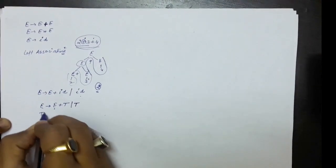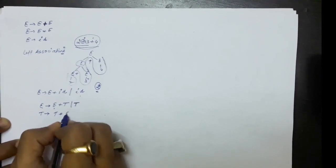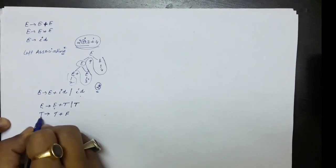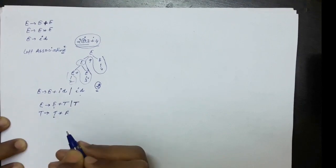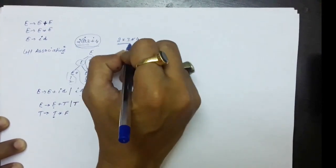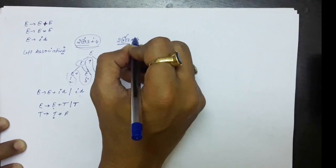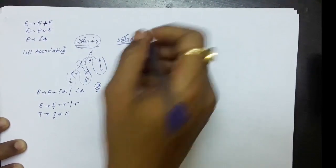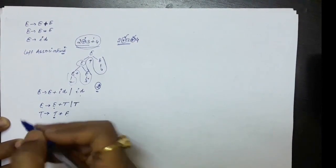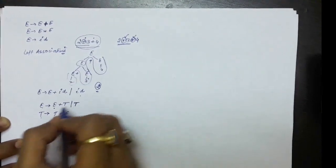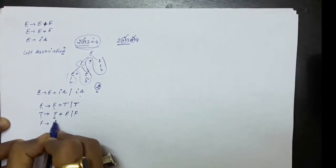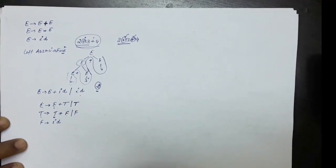T produces T star F because here also it is growing towards the left — multiplication is also left recursive. We need to provide this symbol more precedence through left associativity. For providing left associativity, we grow the grammar towards the left. If the grammar has only one symbol — the identifier — then F produces only id.